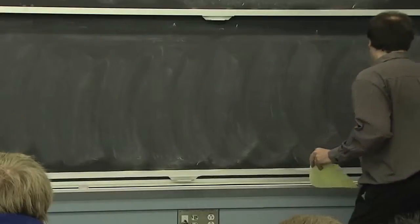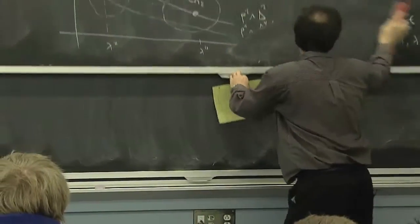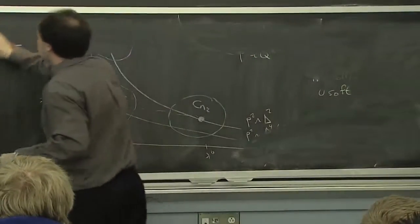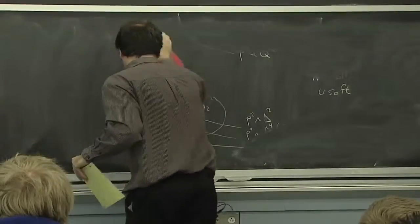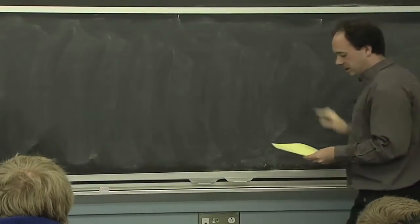And I'm going to take the same attitude here. Let's just write down some full theory objects and expand them in the limits that we've been talking about. And then we'll see what kind of effective theory we want based on the results from those expansions.